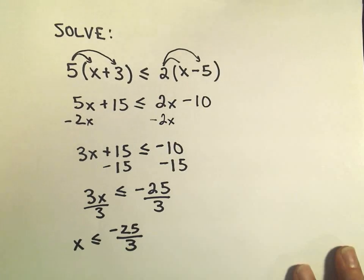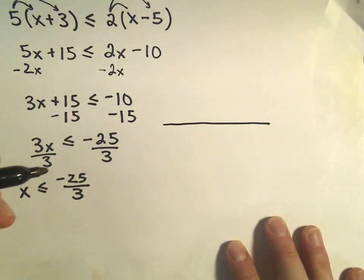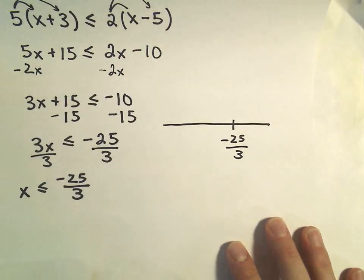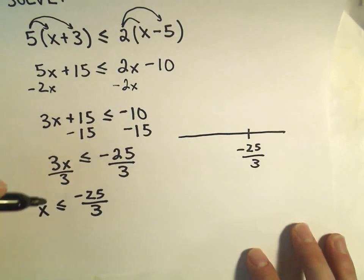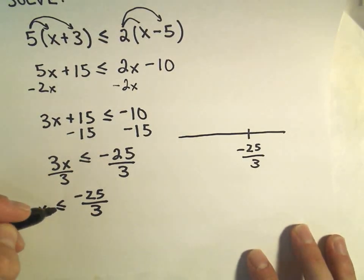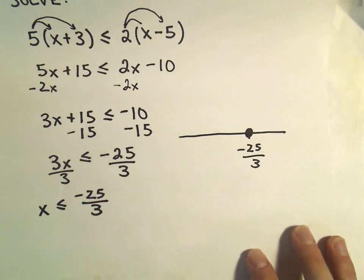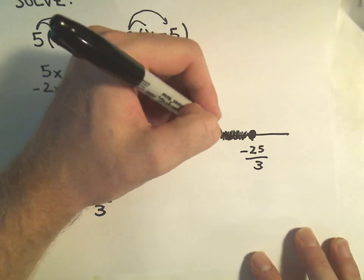Again, if we wanted to write this in interval notation, first, I always like to make a little graph. I almost think about it in my head. So here's negative 25 over 3. I'm just kind of making a little number line arbitrarily. It can be less than or equal to, that's what the little line means, that number. So now we're going to shade it in to indicate that that number works. And then it says everything less than that also works.